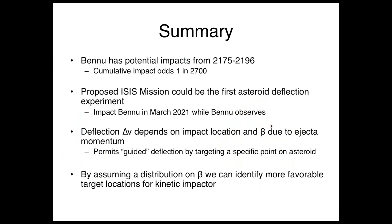To summarize, we have several potential impacts late in the next century, and the odds there of impact are 1 in 2,700. There is this proposed ISIS mission that could do a deflection experiment, and it would tell us a lot about how to deflect an asteroid that's really threatening us. The deflection that we actually get depends on where we hit the asteroid with the ISIS spacecraft, and it also depends on the beta. This concept permits us to guide the deflection by targeting specific points on the asteroid. And since we don't know beta, we can assume a distribution and identify favorable and less favorable locations on the asteroid to impact. Thank you.